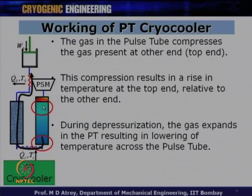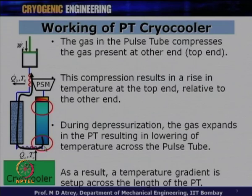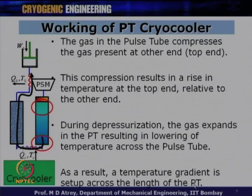Temperature at the top end and bottom end both reduce during depressurization. But previously, the top end was at a higher temperature than the bottom end. As a result, a temperature gradient gets set up across the length — temperature starts decreasing going down. So: gas pressurization happens, temperature at the top end increases; depressurization happens, temperature decreases. As a result, a temperature gradient is set up across the length of the pulse tube.